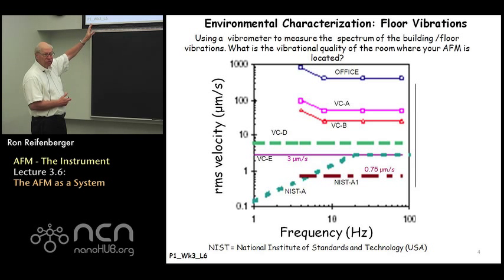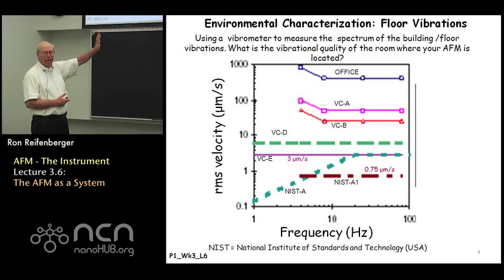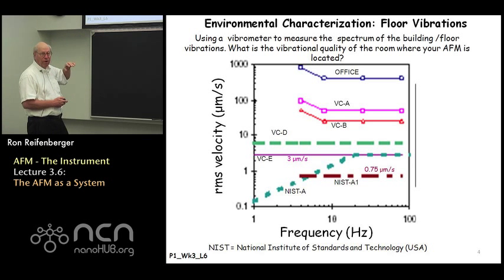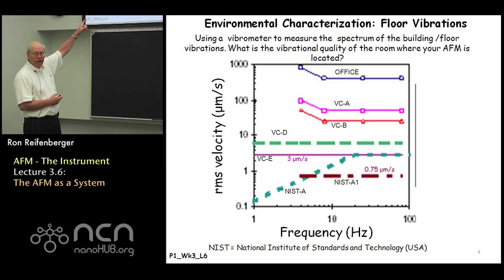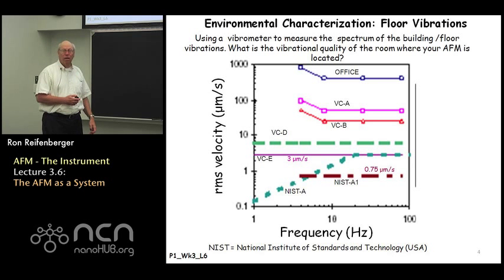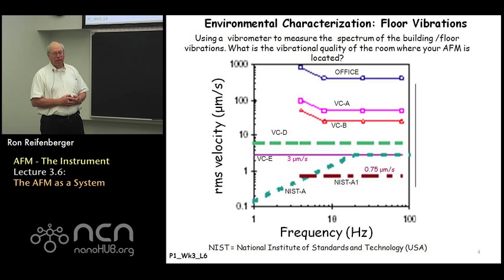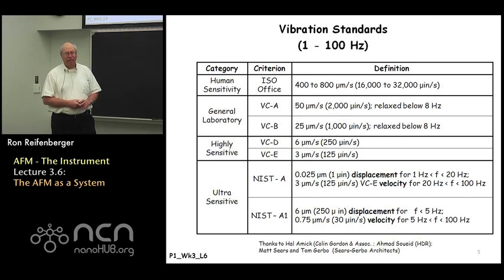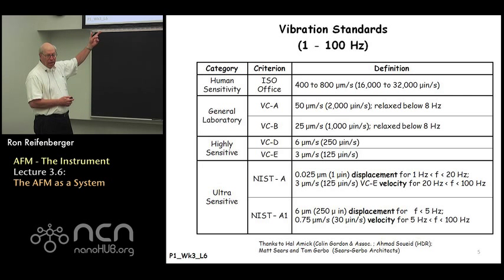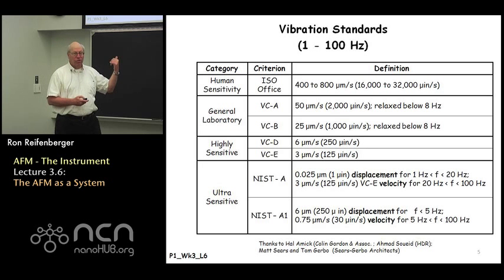The frequency of vibrations goes from on the order of one to on the order of 100 hertz. Above 100 hertz you start to talk about acoustic vibrations — acoustic noise coupling into your instrument. Frequencies below 100 hertz are characterized in terms of floor vibration levels. If you can achieve the so-called Vibration Criteria E, the VCE level — basically three microns per second vibration of the floor over the entire frequency range from one to 100 hertz — then you have a very good, very quiet lab to work in. I also provide the vibration standards in table format for future reference.